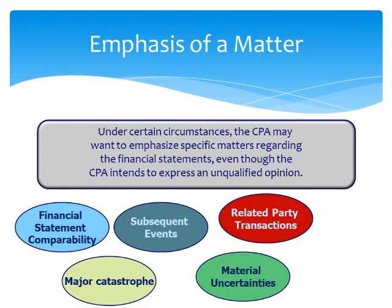Number 5 is the Use of Another Auditor. When the principal auditor makes no reference in the audit report, the type of audit report is unmodified. When the principal auditor qualifies the opinion and makes reference to another auditor in the report, it is a modified wording report. When the auditor refuses to share responsibility for another auditor's work, the opinion may be qualified, and this depends on materiality.